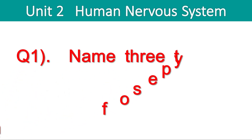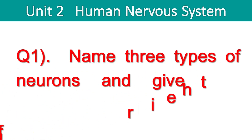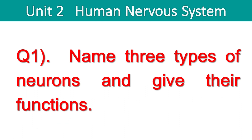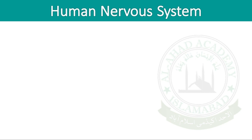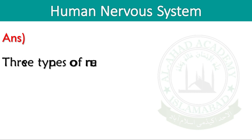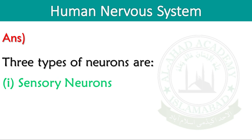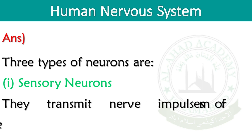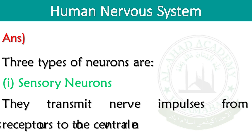Question number 1. Name three types of neurons and give their function. Three types of neurons are: Sensory neurons — they transmit nerve impulses from receptors to the central nervous system.